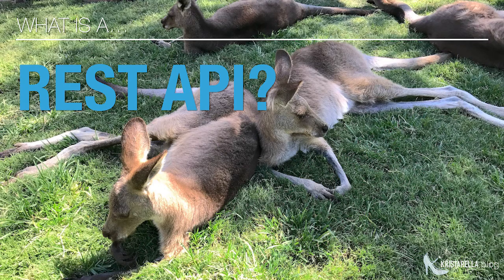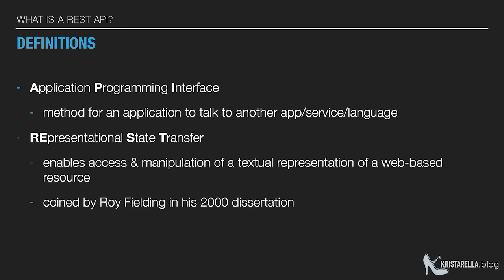So what is a REST API? It's not about resting or napping. An API is an application programming interface — it's a way for different applications and different websites to talk to each other. The phrase REST was coined by Roy Fielding in his dissertation in 2000. It stands for Representational State Transfer. Basically you've got a text representation of some information, and you can transfer that — you can get the information and manipulate it through the API.